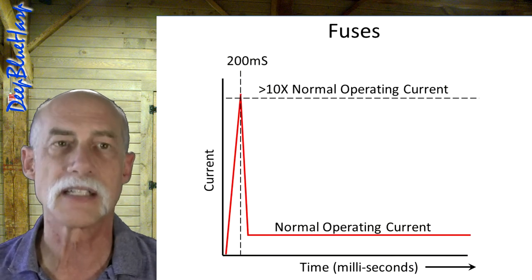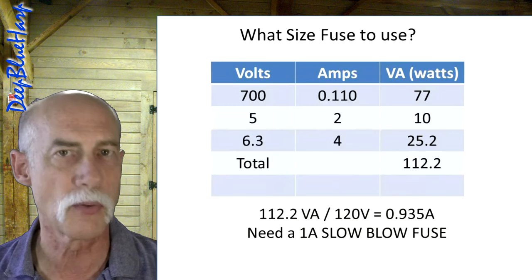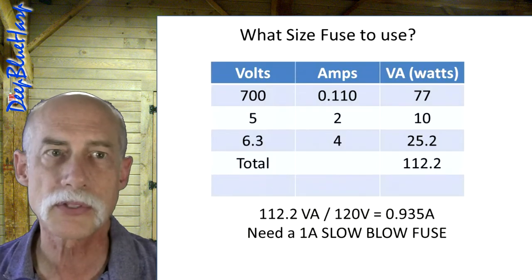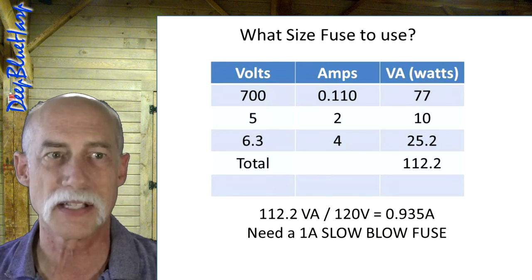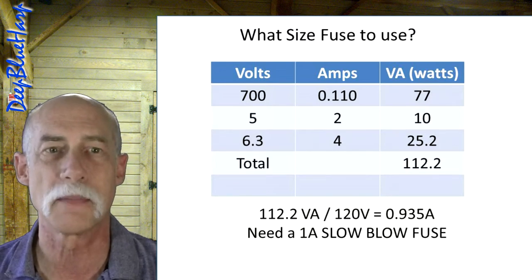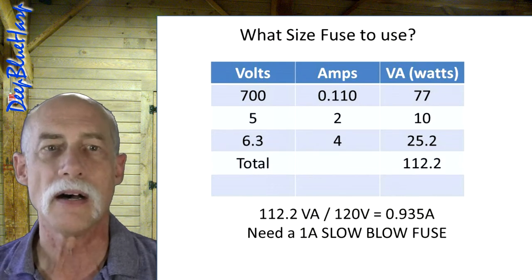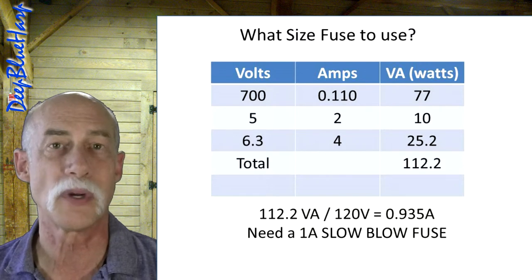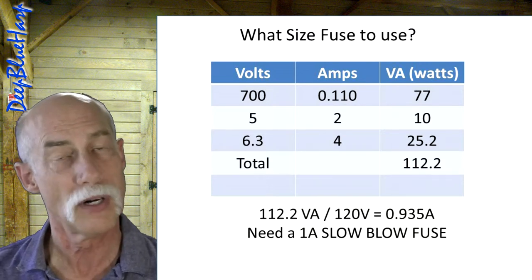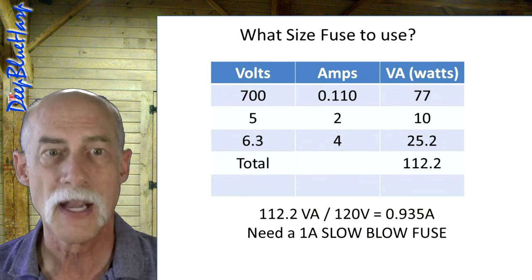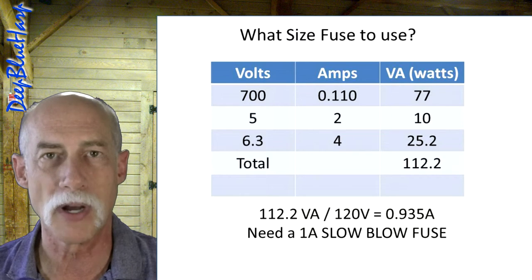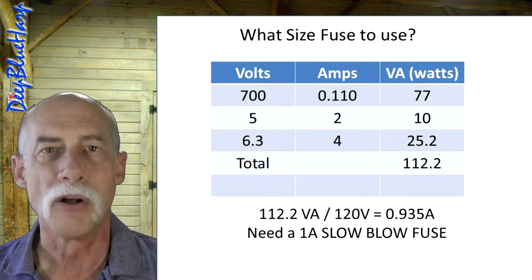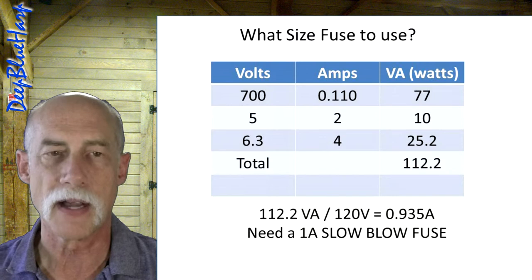The size of the fuse is dependent on this. There's three windings: 700 volts at 0.11 amps, 5 volts at 2 amps, and 6.3 volts at 4 amps. That gives us a total of 112 volt amps divided by 120 volts, which is the wall voltage for where I live. That gives us about 0.93 amps, or I need a 1 amp slow blow fuse for this project. That will suffice.